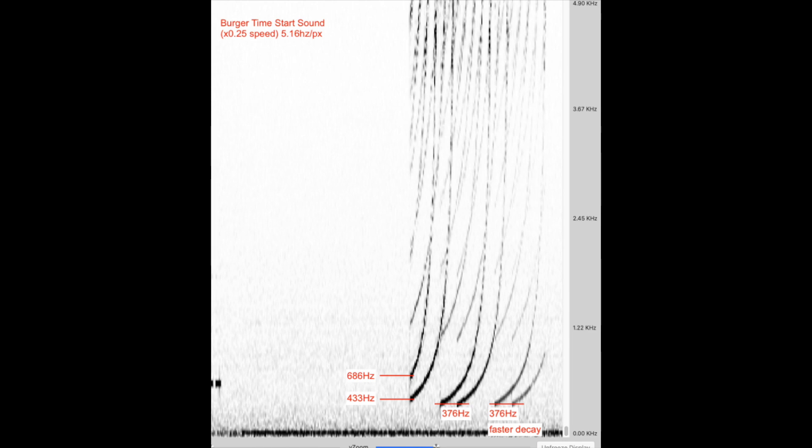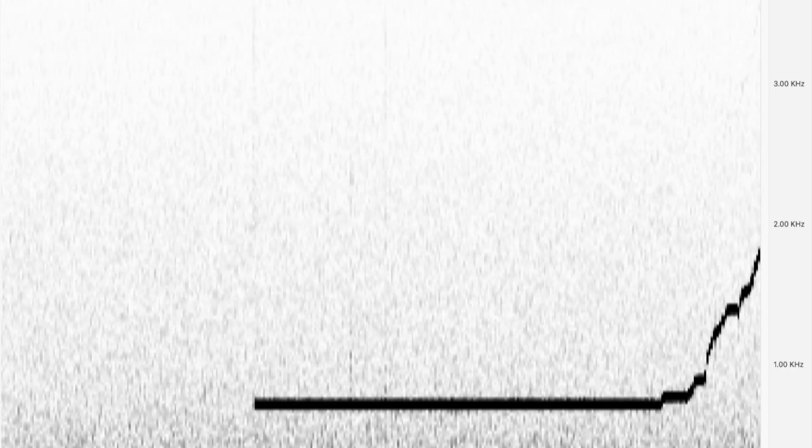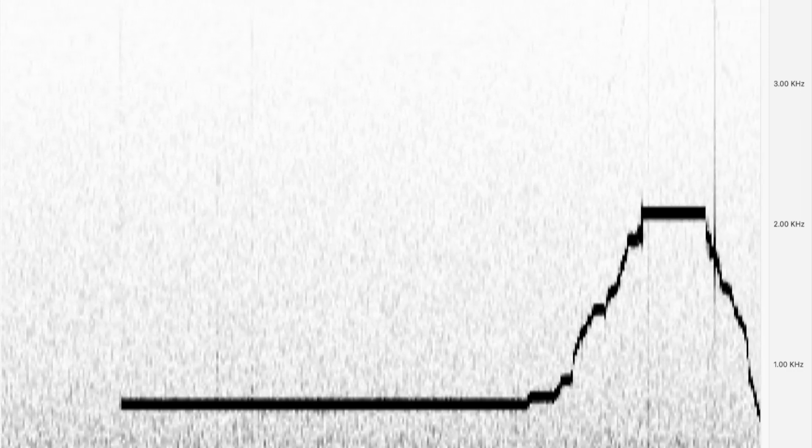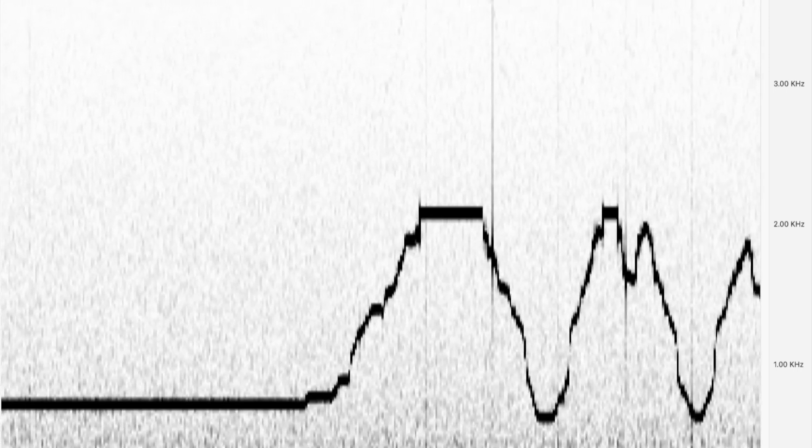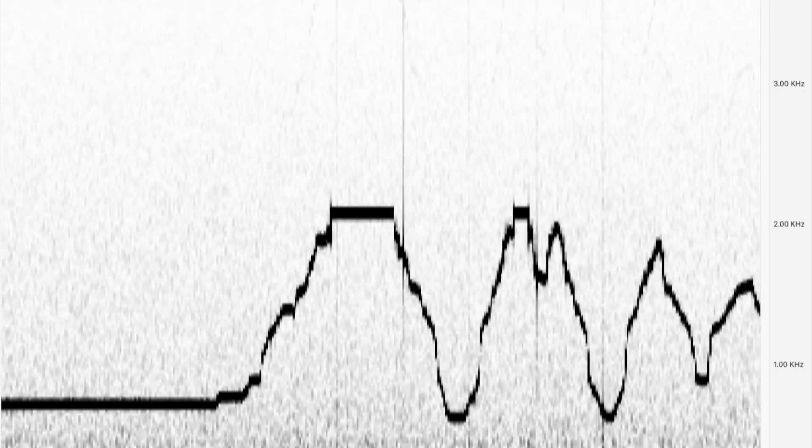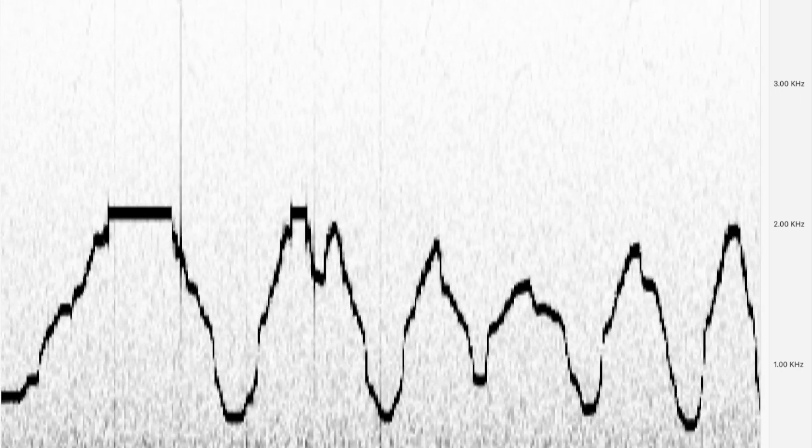This is an example of the startup chirps from the game BurgerTime. These are presented here as the output of a spectrograph. A spectrograph plots frequency intensity on the vertical axis over time on the horizontal axis. To give you a better idea of what's going on here, here's a variable pitch tone with its corresponding spectrograph trace.